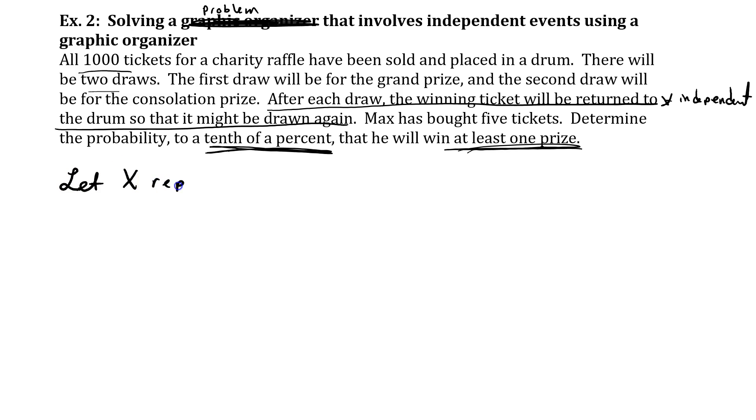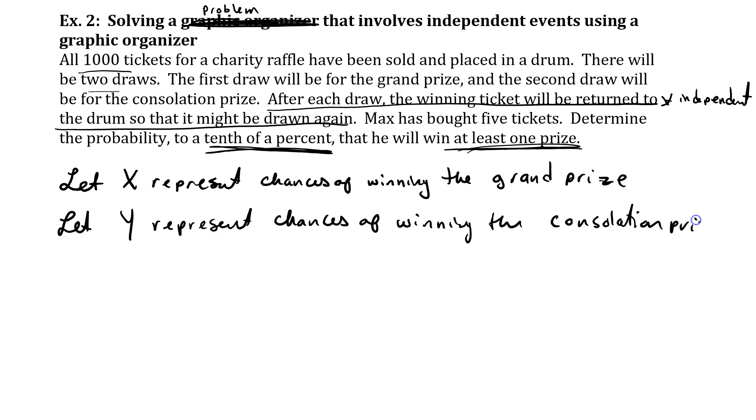Let X represent chances of winning the grand prize. Let Y represent chances of winning the consolation prize. So, that means that if you don't win, that's X prime. And if you don't win the consolation prize, that's Y prime.